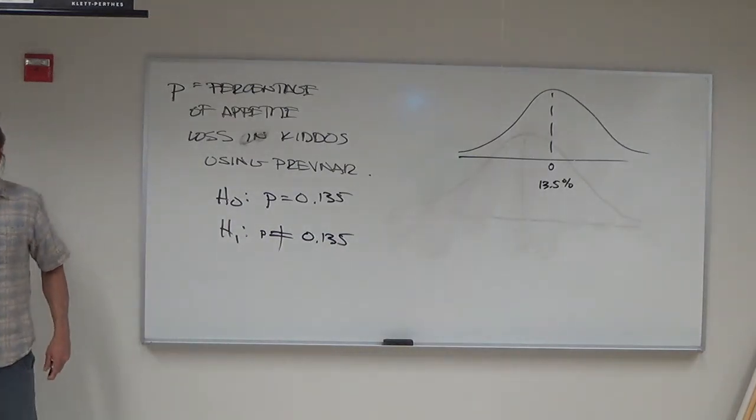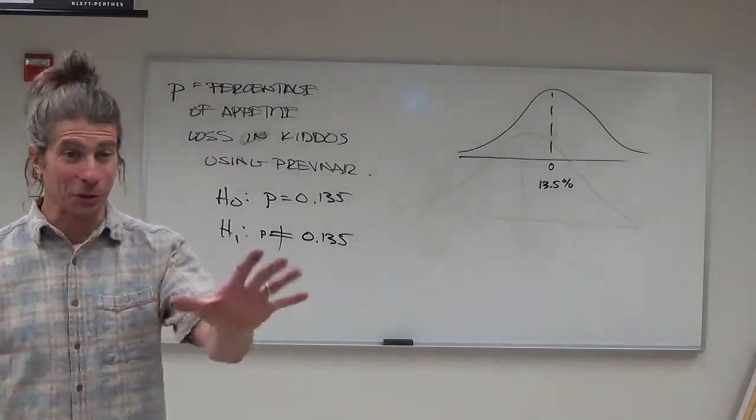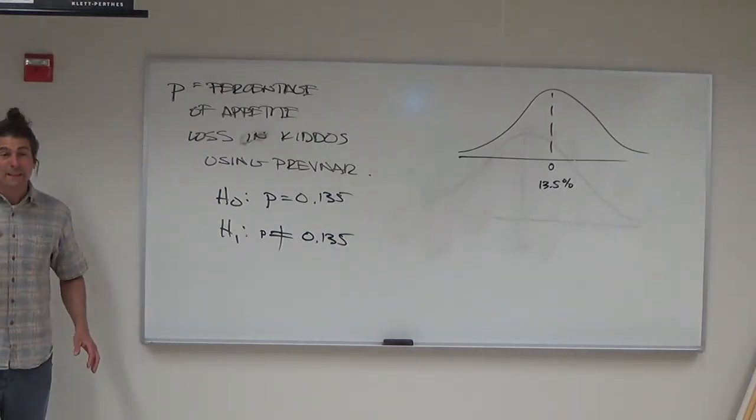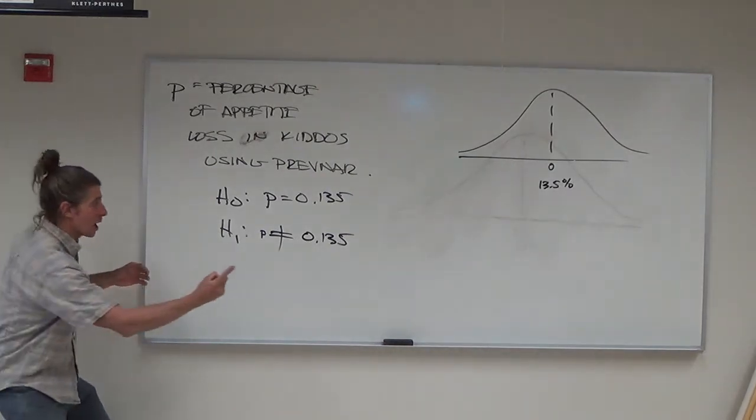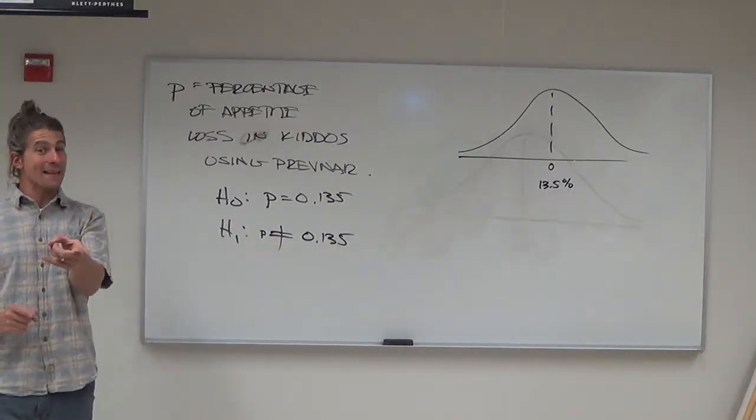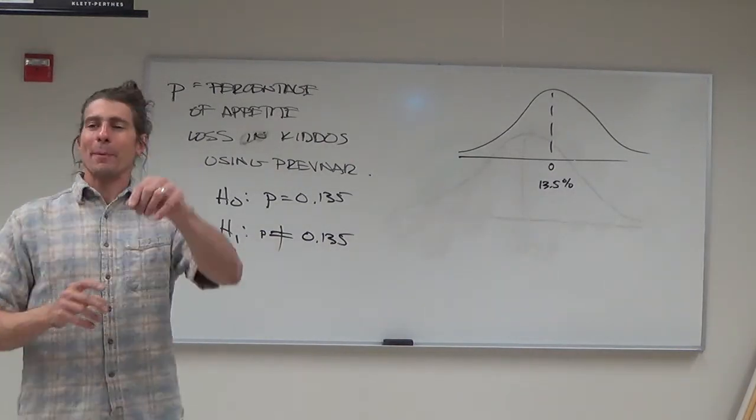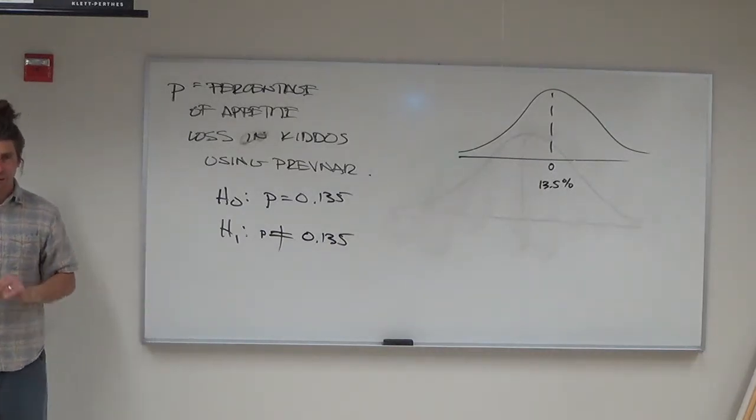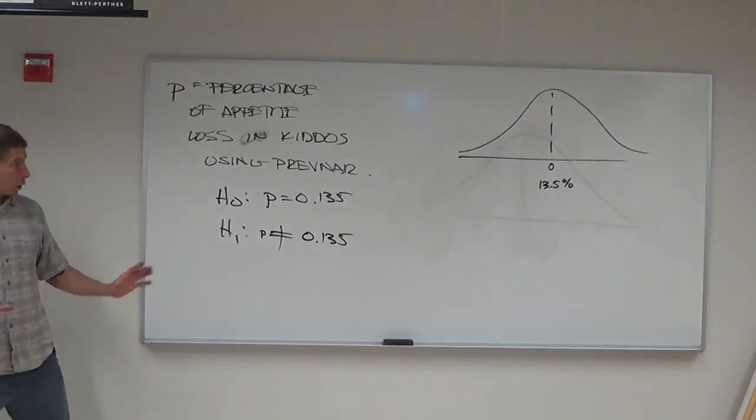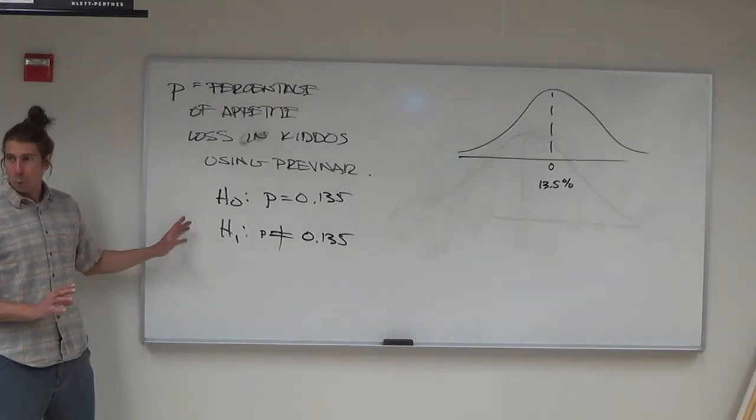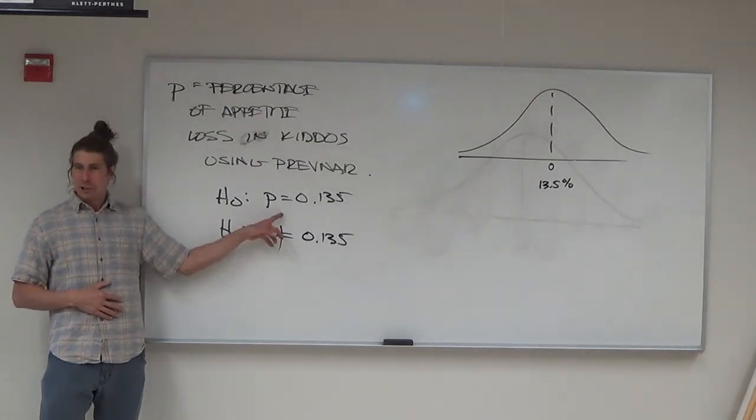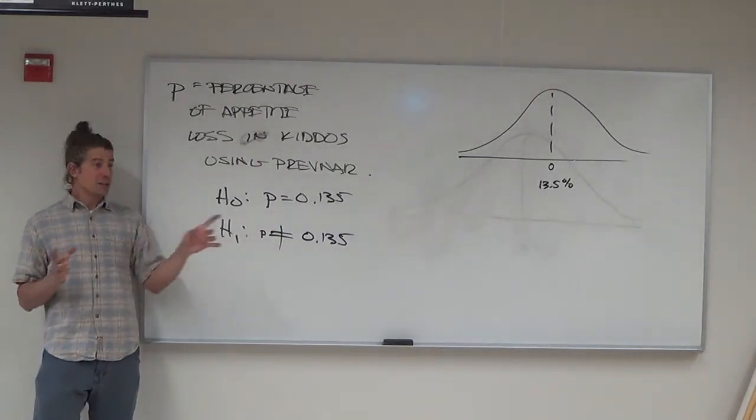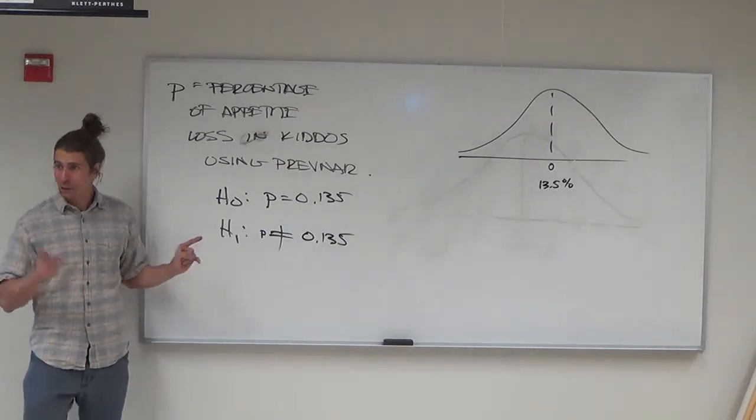A student asks what number they're looking for after running the test. The instructor confirms they're still looking for 5%, which doesn't change. They're still looking for a small p-value, which in this case would mean the rate of appetite loss is different. The instructor starts to explain something cool about small p-values but decides to come back to it in 10 minutes to avoid getting too far ahead.